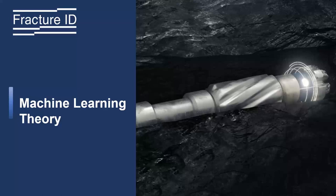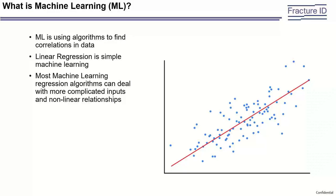Now, a brief discussion on machine learning without getting too technical. Machine learning is simply using algorithms to find correlations in data. If we're doing a regression, linear regression is a simple machine learning algorithm. Most ML algorithms are more complex and can handle nonlinear relationships. So when you hear 'machine learning regression,' just think of it as linear regression — but more beefed up.